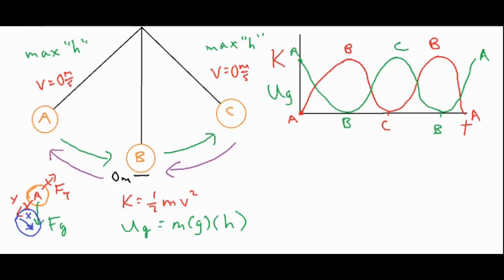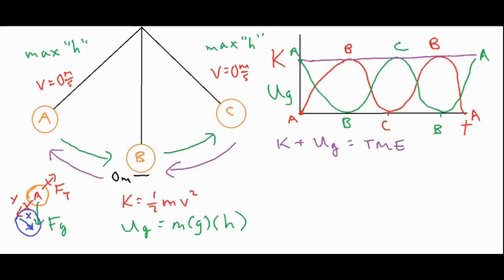That is one full period from position A back to position A, since one period is one full cycle. The sum of kinetic energy K and gravitational potential energy UG equals the total mechanical energy, or TME. The total mechanical energy stays constant assuming no energy is lost to the environment or internally through heat. So if you sum the green and red lines on the graph, they equal the purple line. Wherever UG is at its minimum, KE is at its maximum, and vice versa.